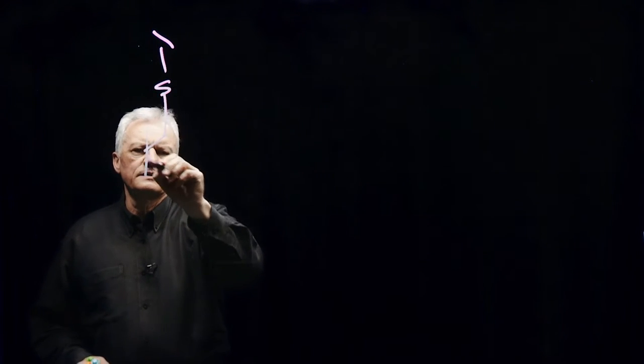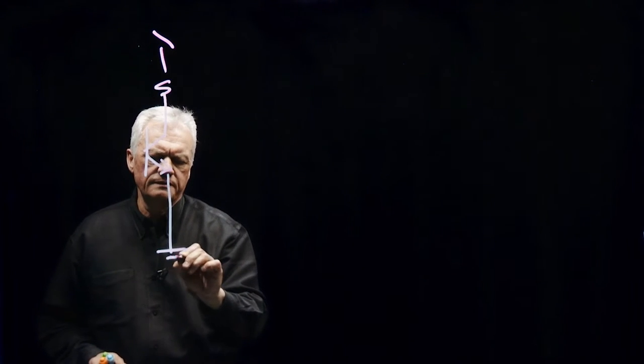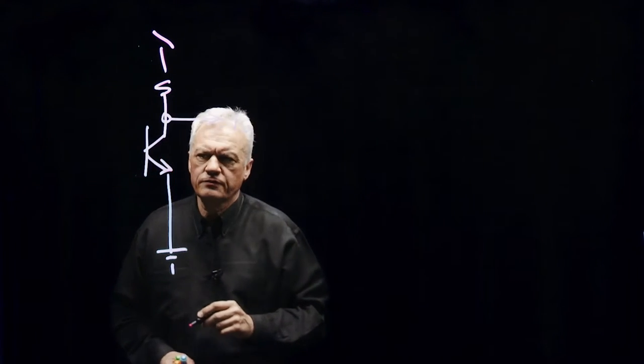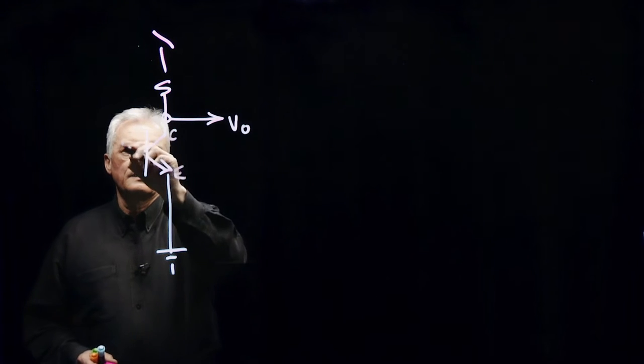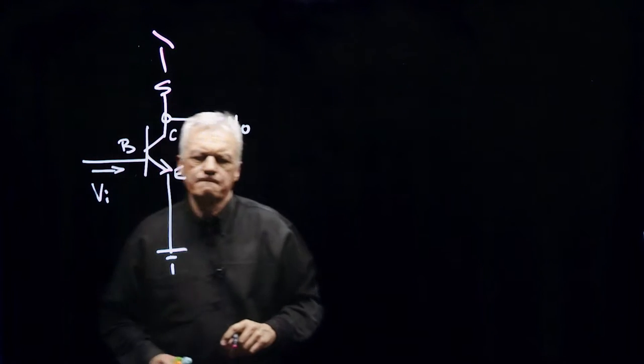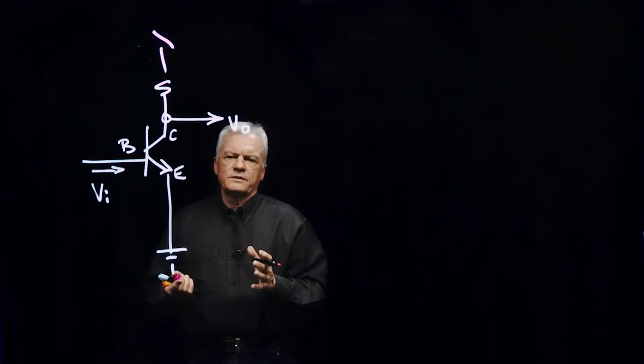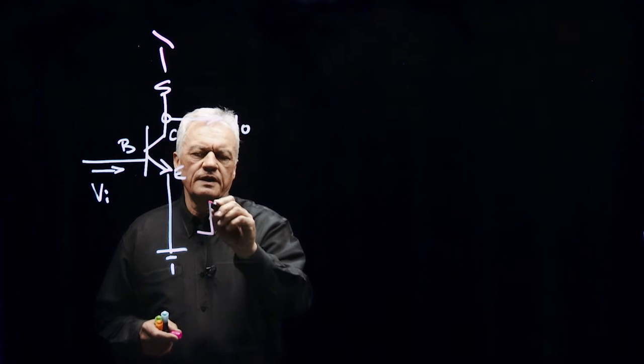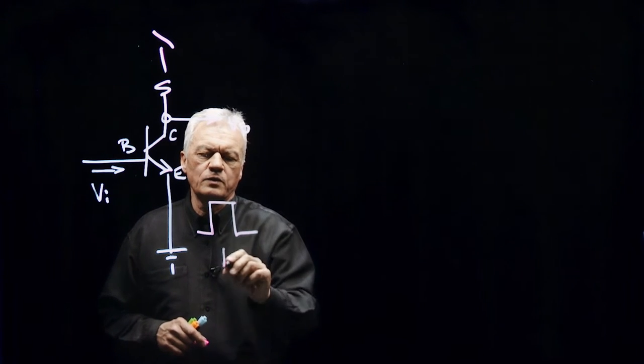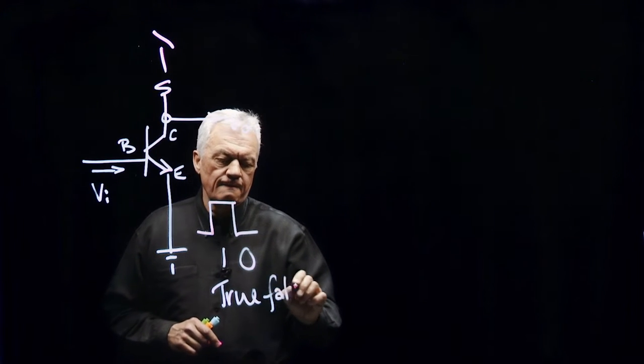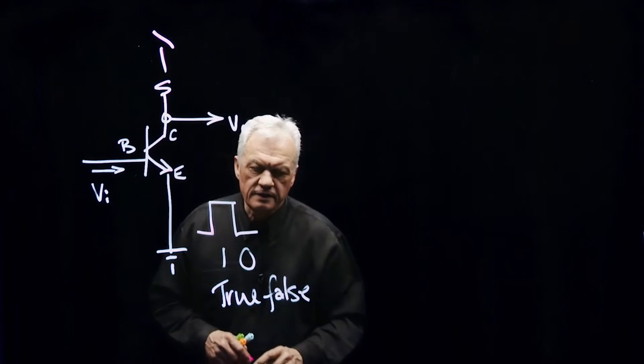If we take a bipolar junction transistor, let's put it looking like an NPN here, grounded emitter. What we're going to do is take our signal out from the collector and put our signal in on the base. This can be turned on fully or turned off completely in order to act as a switch, to give us a high or a low signal, a one or a zero, true or false. Also used in digital circuits.